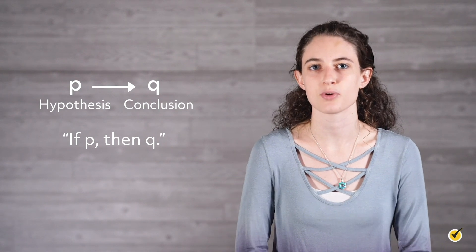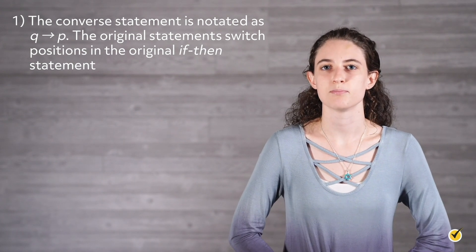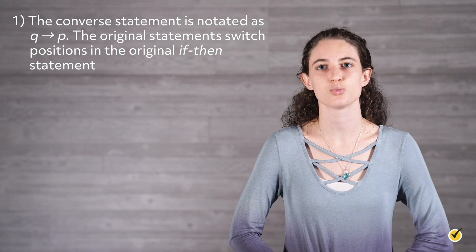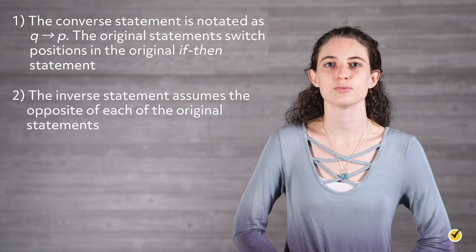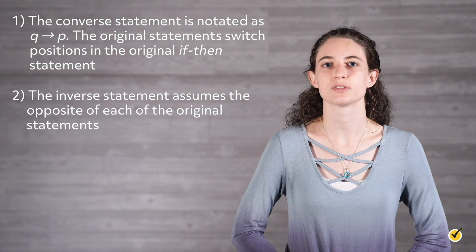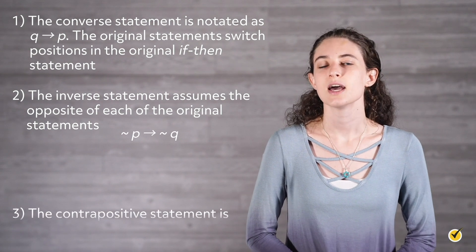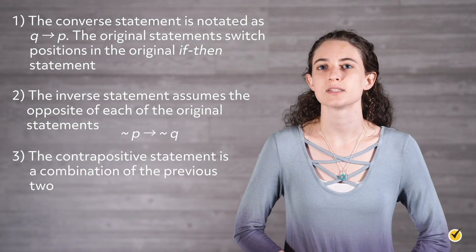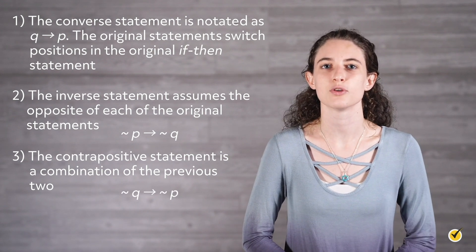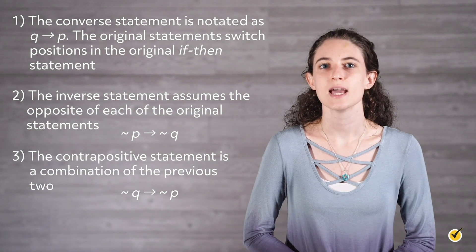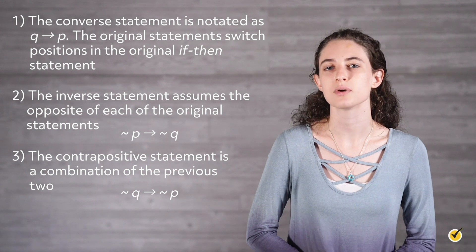When the hypothesis and conclusion are identified in a statement, three other statements can be derived. One: the converse statement is notated as 'if q, then p' — the original statements switch positions. Two: the inverse statement assumes the opposite of each of the original statements and is notated 'if not p, then not q.' And three: the contrapositive statement is a combination of the previous two — the positions of p and q are switched and then the opposite of each is considered: 'if not q, then not p.'